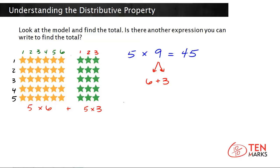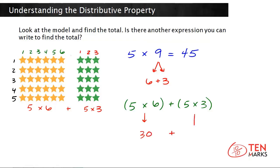You multiply the number in each row by the number of rows. Five times six covers the yellow stars, and we add that to five times three, which is the green array. Five times six plus five times three gives you two separate products. Five times six equals thirty, and five times three equals fifteen. When you add these two numbers together, you have a total of forty-five — the same number you get when you multiply five times nine.